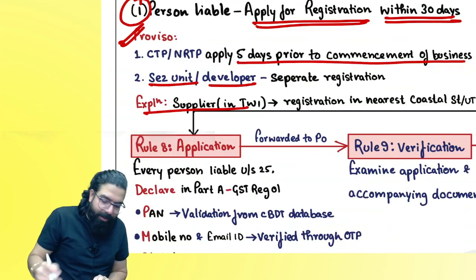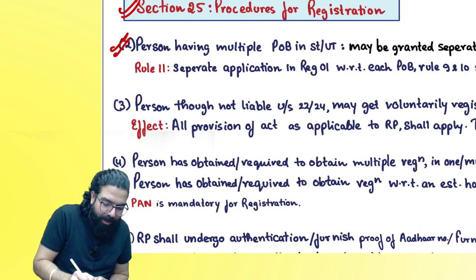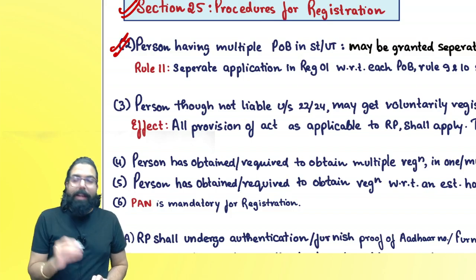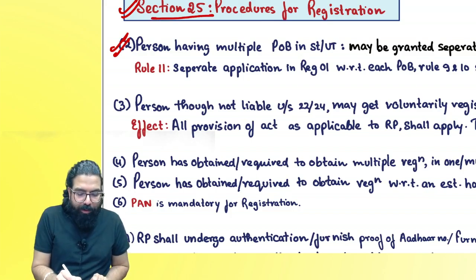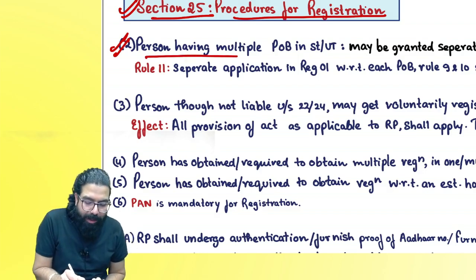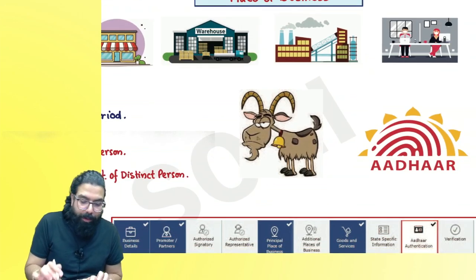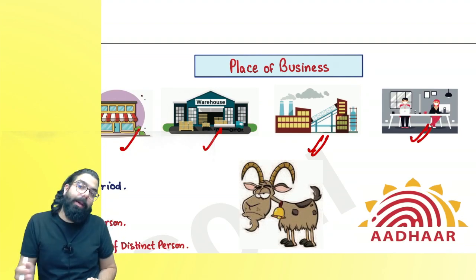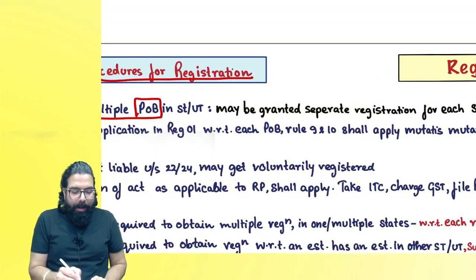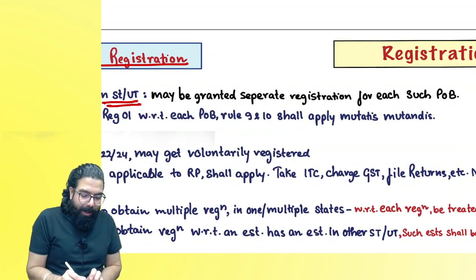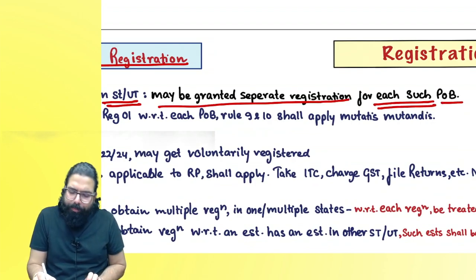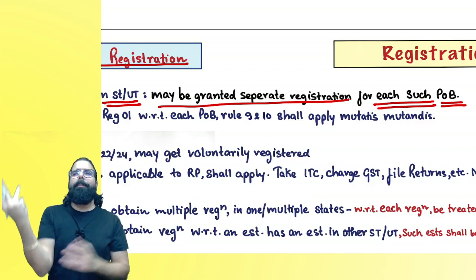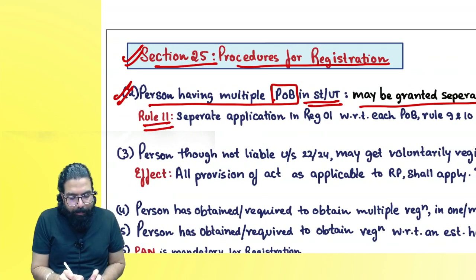Section 25(2) deals with multiple places of business. If you have multiple places of business in one state — say one shop, one godown, one factory, one back office — you can take separate registration for each. It may be granted separate registration for each place of business. Under rule 11, you give a separate application in FORM GST REG-01 for each place of business.